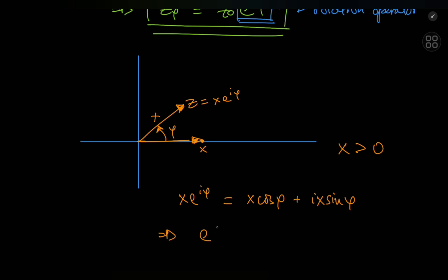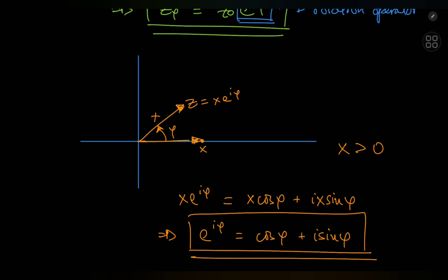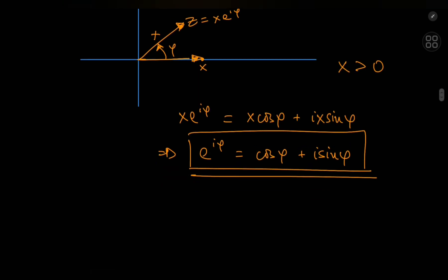We can conclude that e to the i phi in fact equals the cosine of phi plus i times the sine of phi. Which is just beautiful, isn't it? This is amazing. It's a wonderful connection between the exponential function and the trigonometric functions in the complex realm.